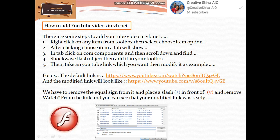For example, the default link is this and the modified link is this. You would have to paste the modified link in the properties of shock wave flash object in url. In modified link we have to remove the equal sign from it and place a slash in front of v. And remove watch question mark from the link and you can see that your modified link was ready. In below this is a pictorial example of shock wave flash object.